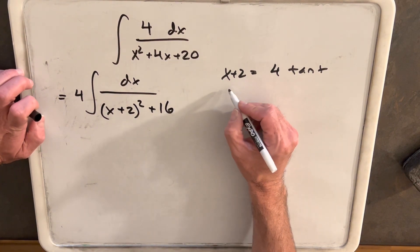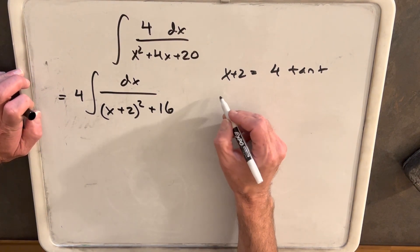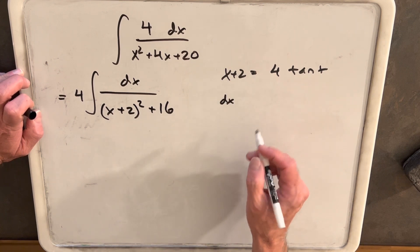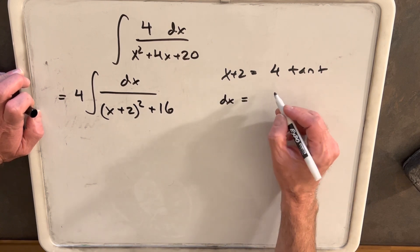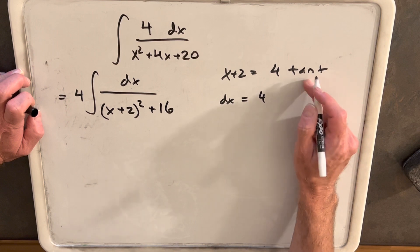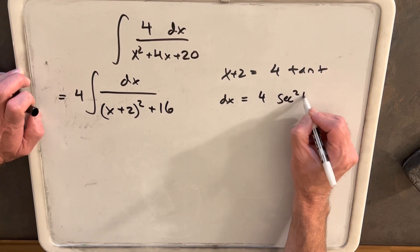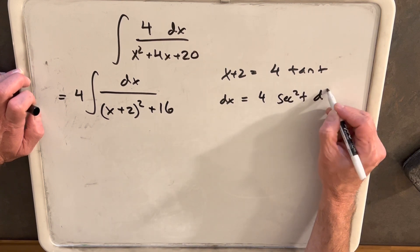Then we need to find our dx value. So we'll take the derivative of the left side here, dx. Derivative of this is just dx, and that's going to equal 4 secant squared as the derivative of tangent dt.